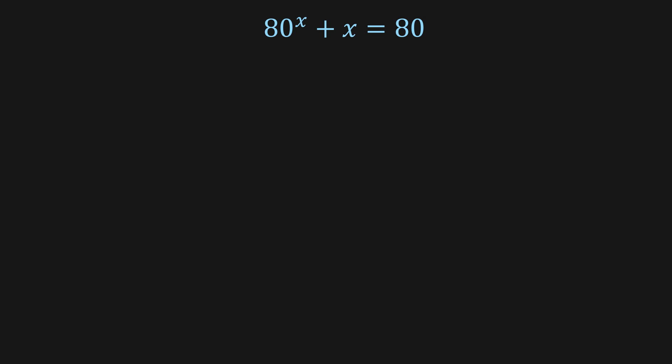Hello guys, welcome to the channel. Today we're going to be solving this problem using the Lambert W function. The Lambert W function says that W(a · eᵃ) = a. What we're going to do is work on this expression to make it look similar to that form.